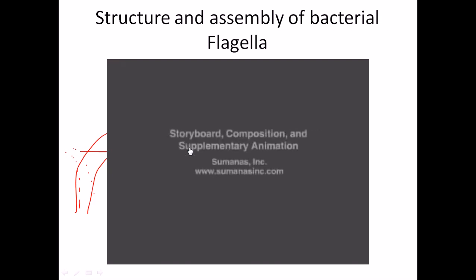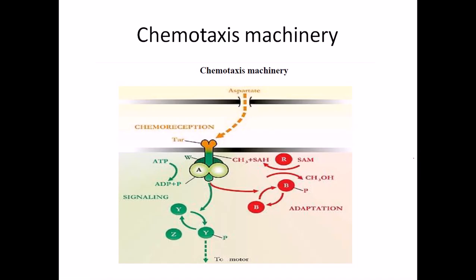Now we are going to talk about another portion of our discussion which is the Chemotaxis Machinery. It is very important for flagella to move according to chemical responses because bacteria have to move from one place to another. The importance of having flagella or making flagella like a motor is to maintain the movement of the bacterial cell, rotating the flagella to finally move the cell. This movement based on chemical signals is called Chemotaxis, as illustrated in this picture.